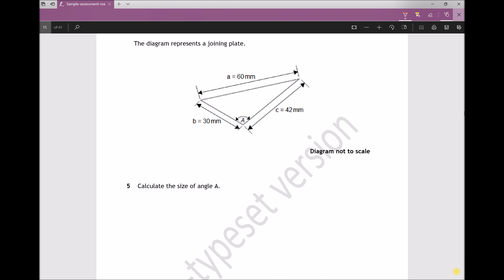So instead we're going to use the cosine rule, which states that A squared equals B squared plus C squared minus 2bc cos A. Now that formula can be found at the start of this exam paper, so you would be given that in the exam.